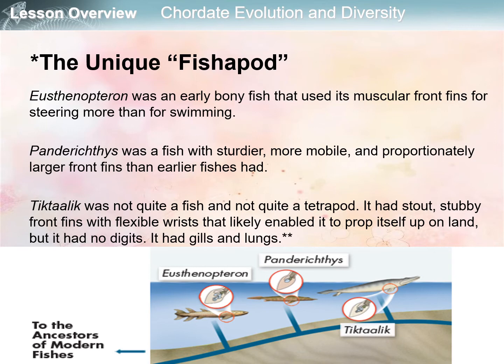Some groups of fishapods shown in the figure include the Eusthenopteron, the Panderichthys, and the Tiktaalik. The Eusthenopteron was an early bony fish that used its muscular front fins for steering more than for swimming. The Panderichthys was a fish with sturdier, more mobile, and proportionately larger front fins than earlier fishes. The Tiktaalik was not quite a fish and not quite a tetrapod — it had stout, stubby front fins with flexible wrists and could likely prop itself up on land.